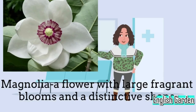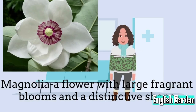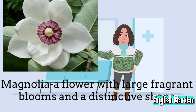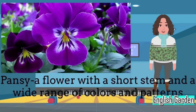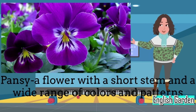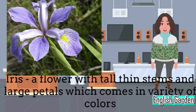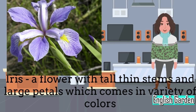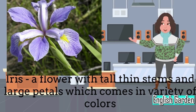Magnolia: a flower with large, fragrant blooms and a distinctive shape. Pansy: a flower with a short stem and a wide range of colors and patterns. Iris: a flower with tall, thin stems and large petals, which comes in a variety of colors.